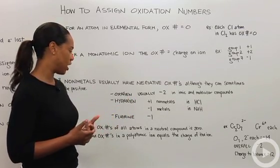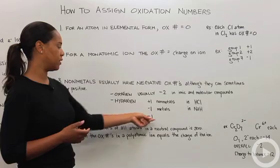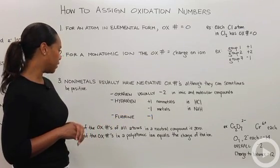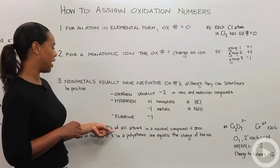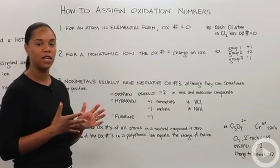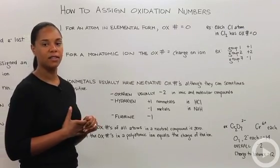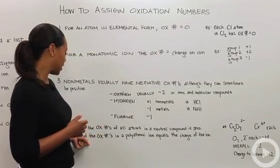We call that a hydride. And then fluorine is negative one. The last rule is that the sum of the oxidation numbers of all atoms in a neutral compound is zero.